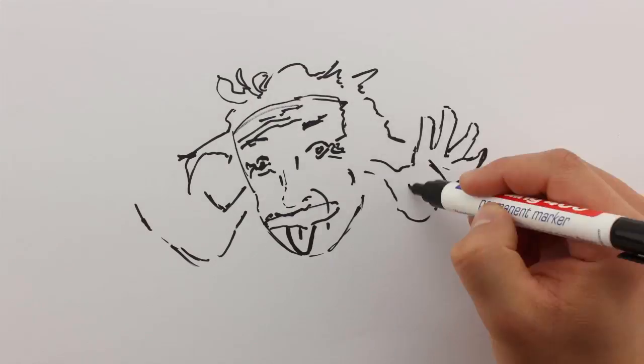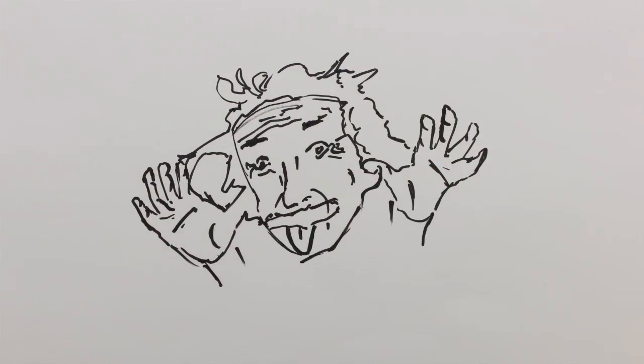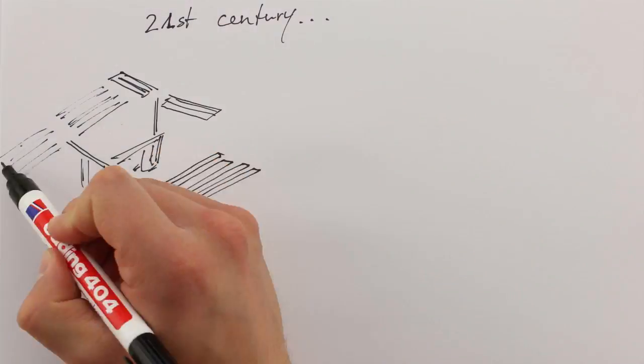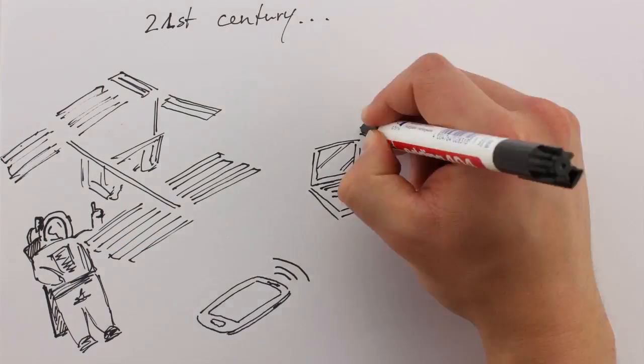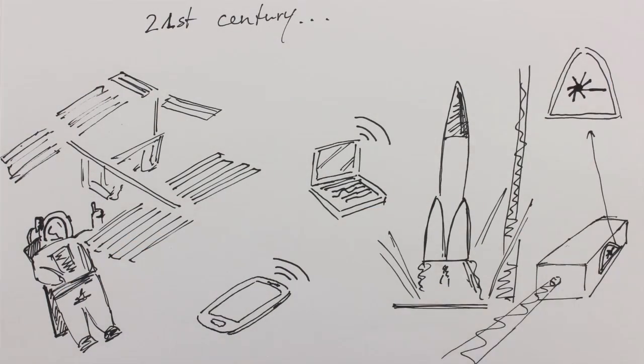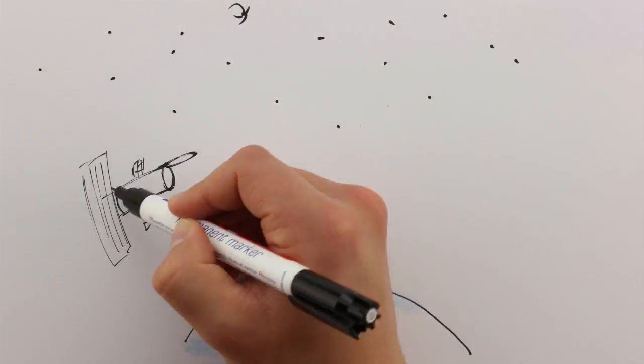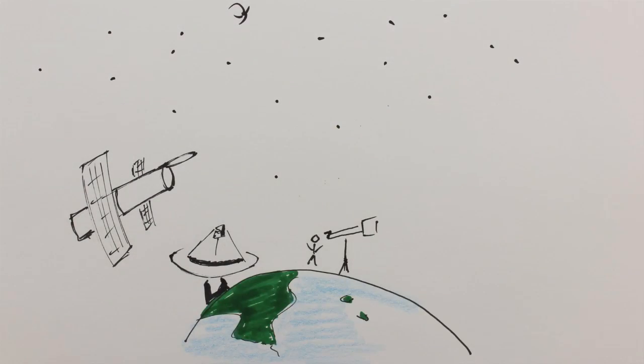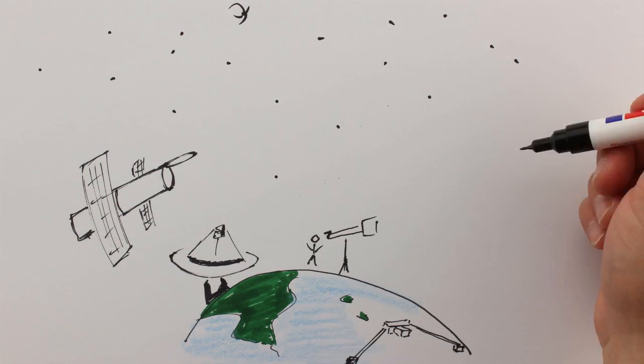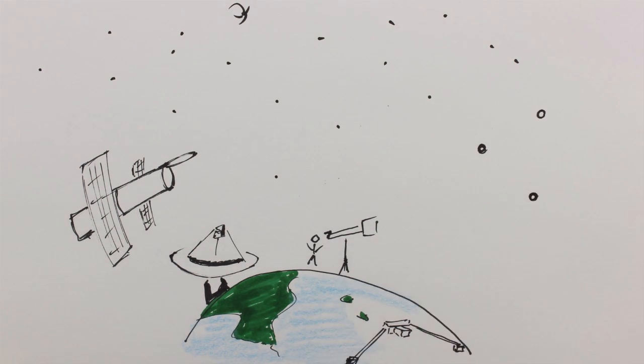Einstein believed it would be absolutely impossible to measure gravitational waves directly. But we are now reaching the point where we do have the technologies that can accurately measure such tiny effects. So in addition to understanding the universe using the electromagnetic spectrum, we will also be able to observe it with gravitational wave detectors. This means we will not only see, but also hear the universe, therefore opening a whole new field of observational astrophysics.